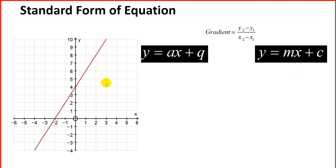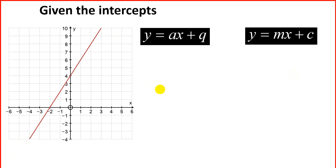Looking at our first example, we want to find the equation of this line. To find the equation, firstly we need to work out a or m, which is your gradient. So we need two points and will use the formula y2 minus y1 over x2 minus x1.